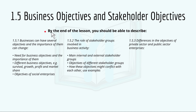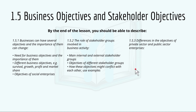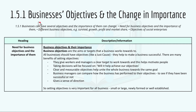By the end of the lesson you should be able to describe 1.5.1: businesses can have several objectives and the importance of them can change. 1.5.2: the role of stakeholder groups involved in business activity. And 1.5.3: the differences in the objectives of private sector and public sector enterprises. Check the pinned comment for all the timestamps, and we'll move on now to 1.5.1, business objectives and the change in importance.